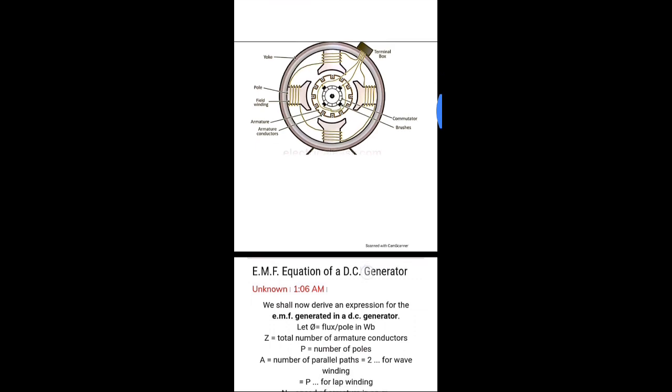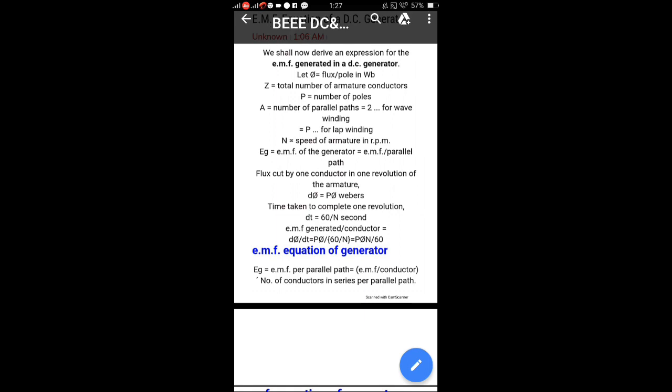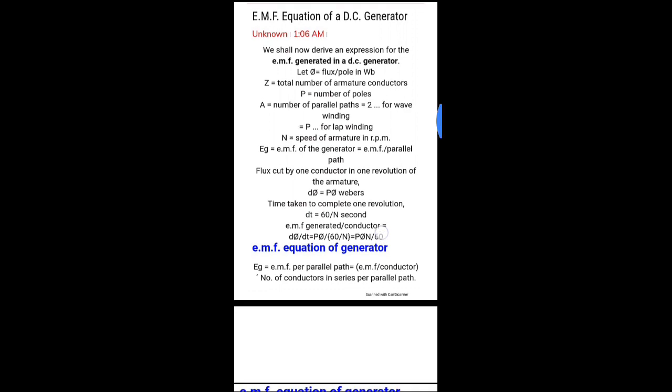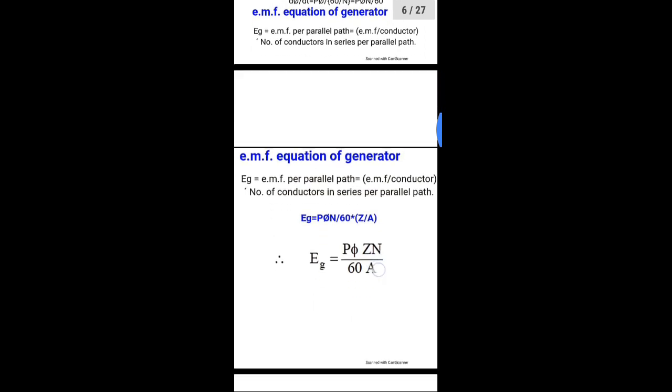The EMF equation of a DC generator is obtained from Faraday's law. The terms are: Z = total number of conductors, P = number of poles, A = number of parallel paths, N = speed of armature in RPM, E = generator EMF. Flux cut by one conductor in one revolution is dΦ = ΦP webers. Time taken for one revolution is 60/N. EMF generated: E = ΦZPN / 60A.